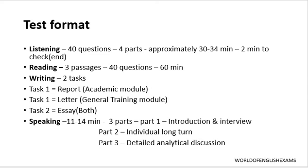After you complete the reading test, you will move to the writing test — the third section. Regardless of the module, every candidate has to complete two tasks. The first task will differ between modules while the second task is the same. If you are taking the academic module, the first task is a report where you will see pictorial representations or diagrammatic illustrations like bar charts, pie charts, line graphs, maps, tables, and other data representations. You must write a minimum of 150 words — meeting this word limit is essential, as anything lesser will penalize your score drastically.